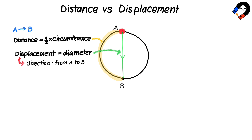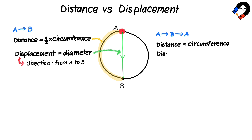Then a ball travels back to point A. The distance traveled from point A to return at point A is equal to the circumference of a circle. However, the displacement is equal to zero, because the ball has returned to its original position.